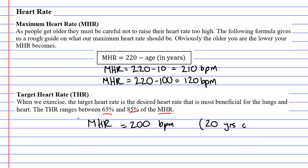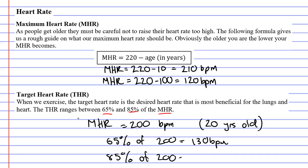To find the target heart rate, we find 65% of 200 and 85% of 200. That gives us 130 BPM and 170 BPM respectively. So when this person is exercising, they're trying to get their heartbeat somewhere between 130 and 170 beats per minute, because that's most beneficial for their lungs and heart. That concludes our video introducing heart rate. Remember to read the description below for links to theory booklets that relate to this video.